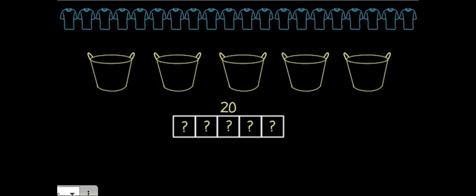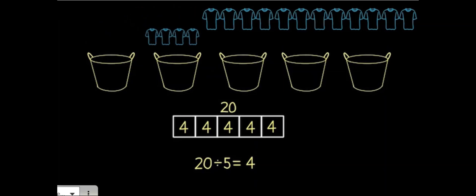This question asks us to solve the problem 20 divided by 5 because we have 20 shirts that we are dividing into five equal groups. When we divide the shirts equally, we find that 20 divided by 5 equals 4. Four shirts go in each bin.